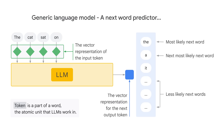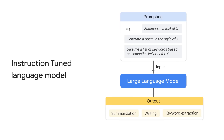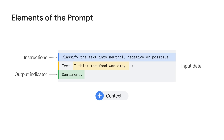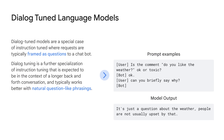In instruction-tuned, the model is trained to predict a response to the instructions given in the input — for example, summarize a text of x, generate a poem in the style of x, give me a list of keywords based on semantic similarity for x, or classify the text into neutral, negative, or positive. In dialogue-tuned, the model is trained to have a dialogue by predicting the next response. Dialogue-tuned models are a special case of instruction-tuned where requests are typically framed as questions to a chatbot. Dialogue tuning works better with natural, question-like phrasings in the context of a longer back-and-forth conversation.